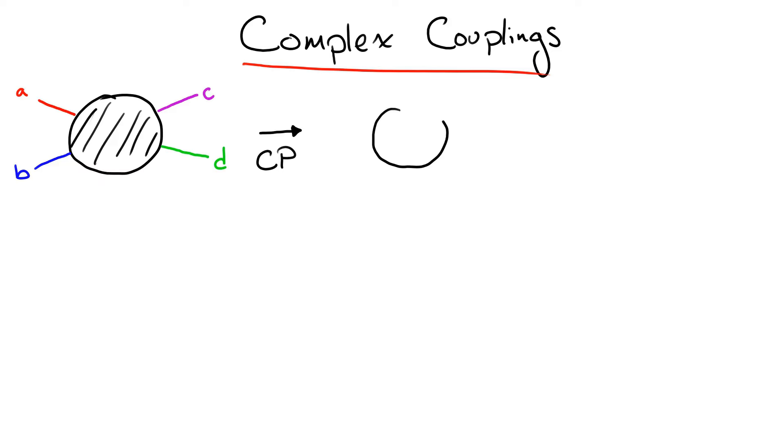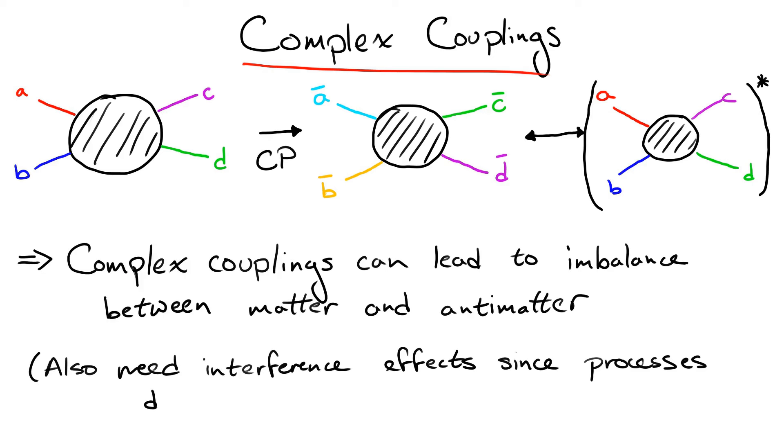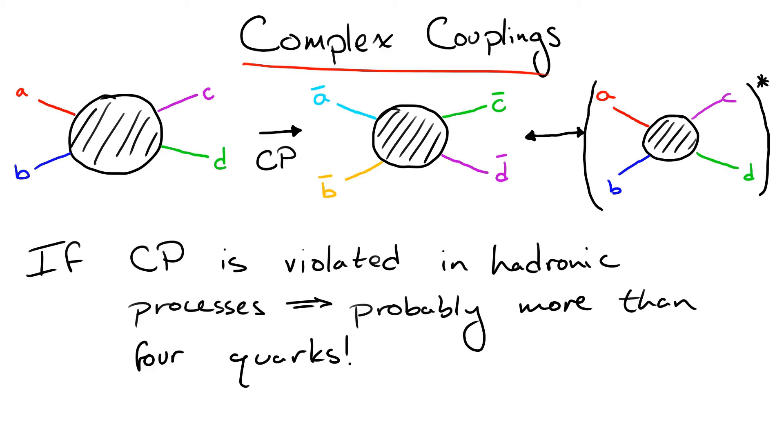Now, complex couplings are very important due to the fact that they allow for CP violation, or an imbalance between matter and antimatter. This can be seen in a simple way – we can take a process and replace all particles with their antiparticles by performing a CP transformation. One part of this transformation is complex conjugation, so if any couplings are complex, they will be different in the CP-transformed process, meaning that the result can, in general, be different from its unconjugated counterpart. There are some other caveats for CP violation to exist in nature, but the important observation is that it absolutely cannot exist without complex physical parameters in the theory. Said another way, if CP violation were observed in hadronic systems, it would immediately be very strong evidence that there are more than just four quarks.